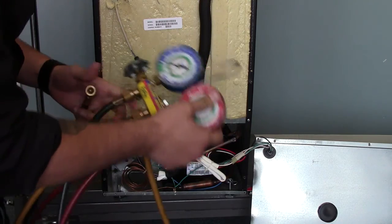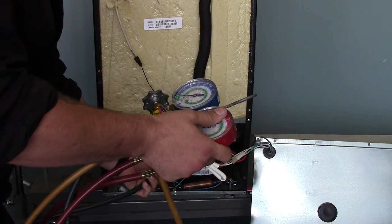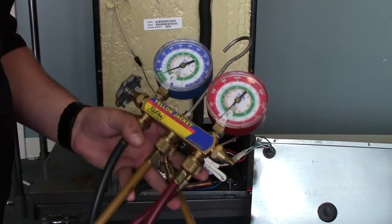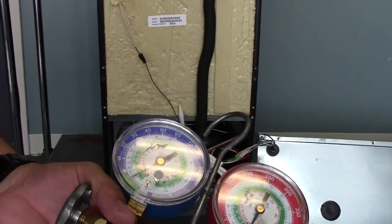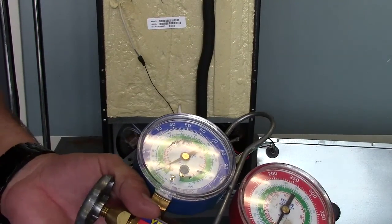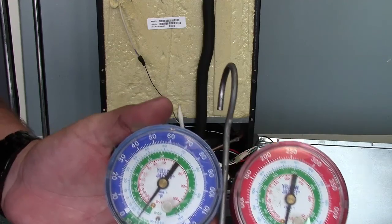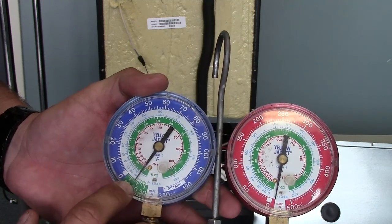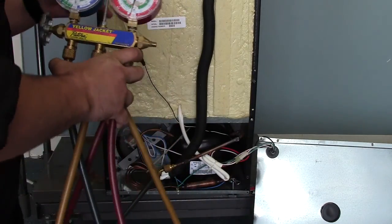Grab the low side of the gauge, and at this point I just plugged it in. I don't know if you can see that, but we're in a vacuum, about a 20 pound vacuum. So this system is completely out of Freon.